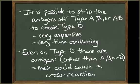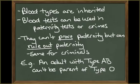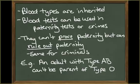It is possible to strip the antigens off a red blood cell to create type O blood, but this is very expensive and time-consuming. Also, even when type O blood is donated, there are still many other antigens besides A or B on the red blood cells that could cause a reaction. So it is important to have a compatibility test performed prior to administering. Blood types are inherited, so blood tests are used as paternity tests and in crime detection. Blood tests cannot prove paternity, but they can rule out paternity of an individual. For example, it is impossible for an adult with type AB blood to be the parent of an infant with type O blood.